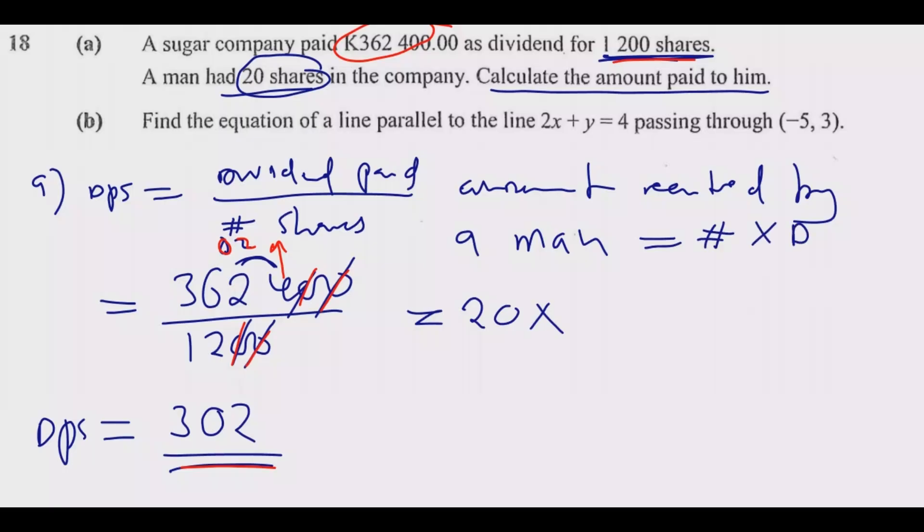Multiply by the dividend per share, which is 302. What we're saying is the number of shares multiplied by dividend per share. Since calculators aren't allowed, we calculate 302 multiplied by 20.